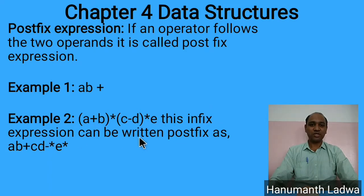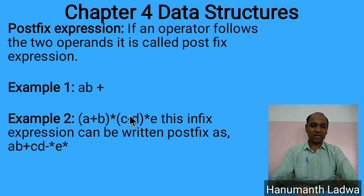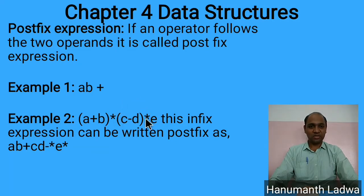For a more complex example, the infix expression (a + b) * (c - d) * e can be written in postfix as: a b + c d - * e *. We evaluate the expression inside the brackets first, bringing the operator to the right: a b +. Then for the second bracketed expression, c d -. Then, evaluating left to right, the asterisk comes after those groups, and finally e is followed by another asterisk.